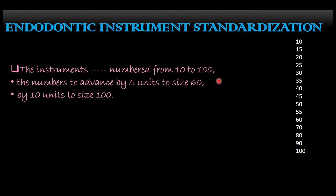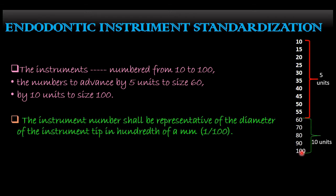It was proposed that the instruments shall be numbered from 10 to 100: that is 10, 15, 20, 25, 30, 35, 40, 45, 50, 55, 60, 70, 80, 90, and 100. As we can see, from 10 to 60 the advancement is by 5 units, and from 60 to 100 the advancement is by 10 units.